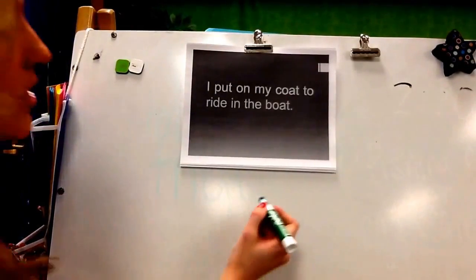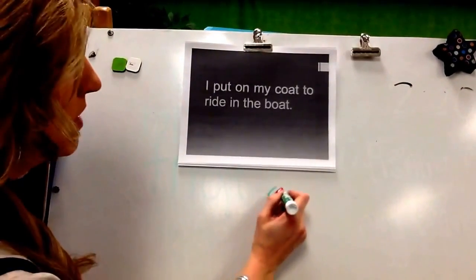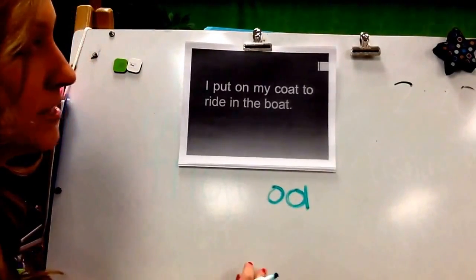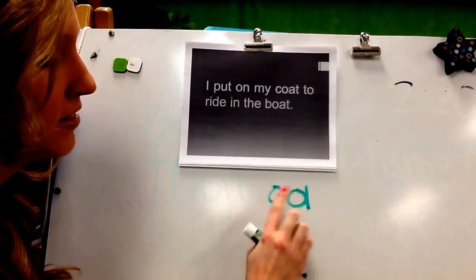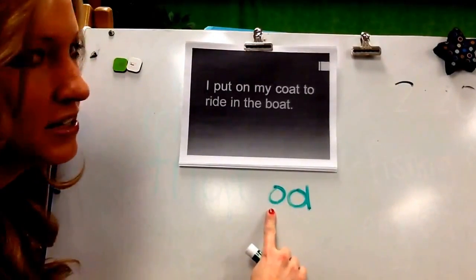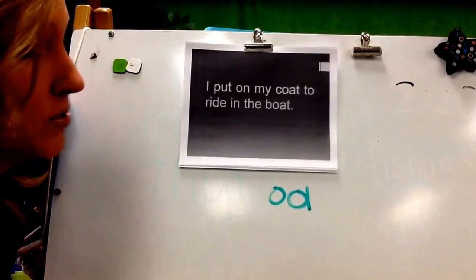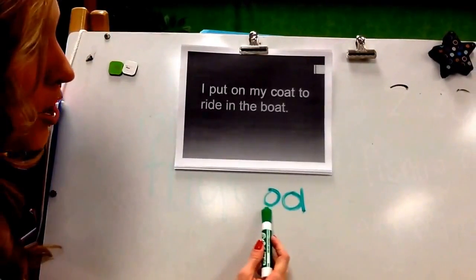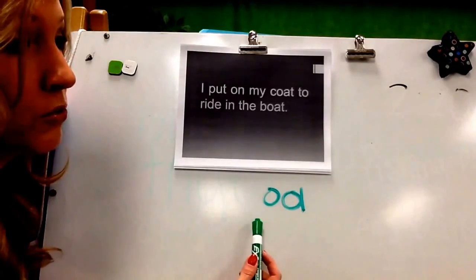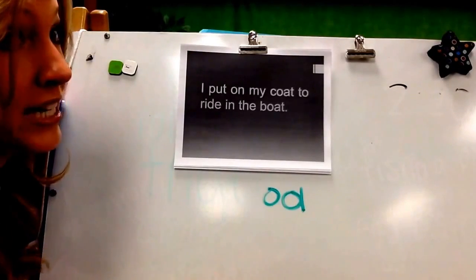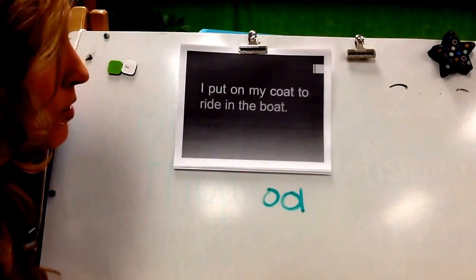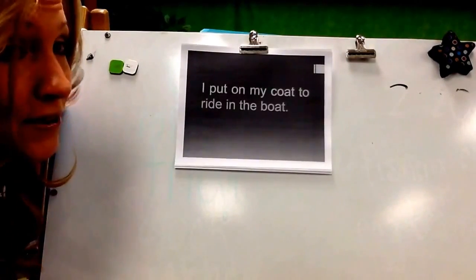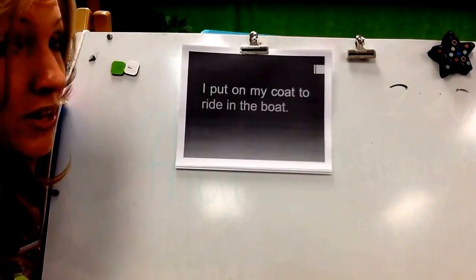We have been learning that O-A makes the O sound. When two vowels are walking, the first vowel does the talking and the second keeps on walking. So when we see O-A and we're reading a word, we're going to read it as O. What we're going to do is practice reading some sentences together and then you're going to do that on your own.